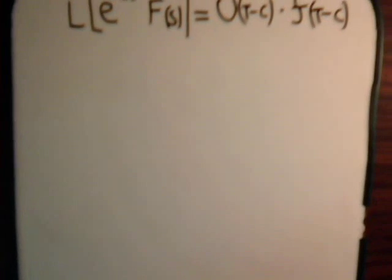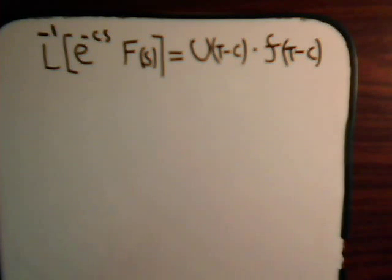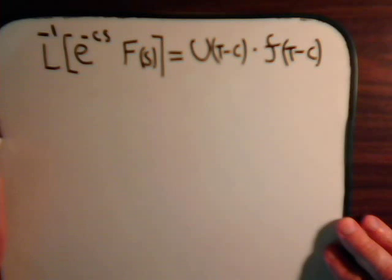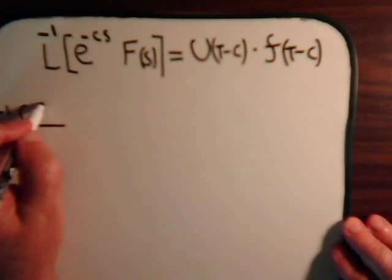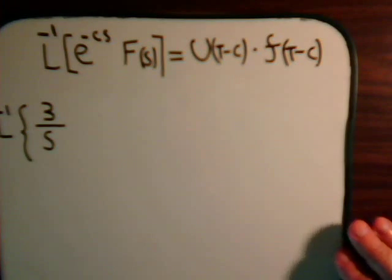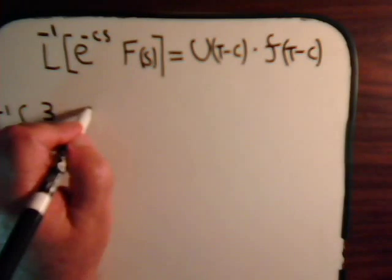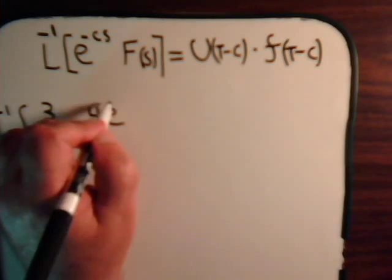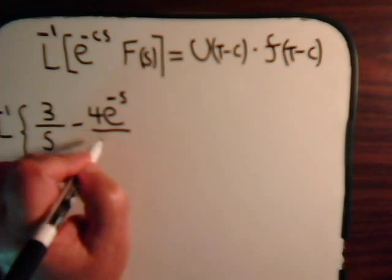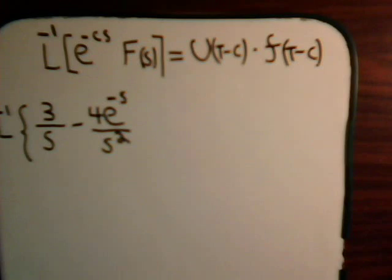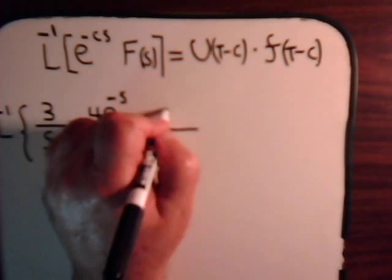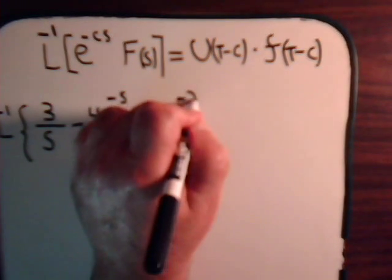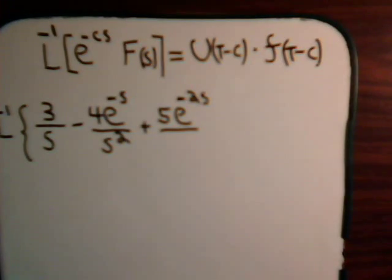And the way to get familiar with this and to understand it is just by working through some problems. So let's consider taking the inverse Laplace transform of this function. Say the first term is 3 divided by s, and we have minus 4, say times e to the minus s divided by s squared. And let's put one more term in, say we have plus 5 times e to the minus 2s divided by s squared.